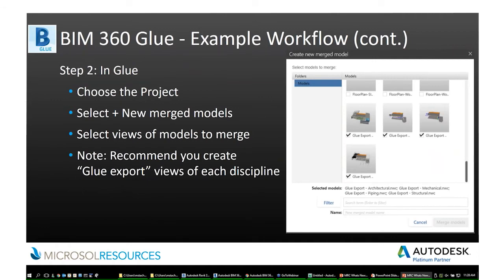Once you get the models up in Glue, you'll choose the project and merge the different discipline models together — typically an architectural model, a mechanical ductwork model, a piping model, an electrical model, and a structural model. Having separate models allows you to easily turn on and off whole disciplines at once. This is why I recommend creating Glue export views in Revit that are specific to each discipline and have only those things you want turned on.